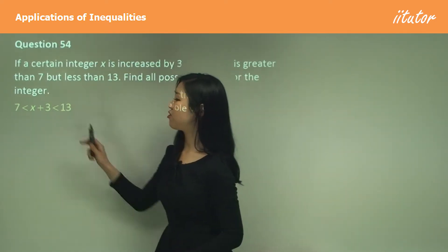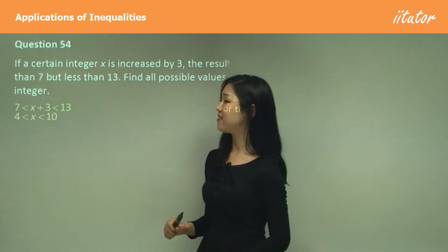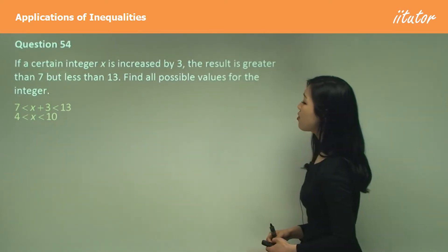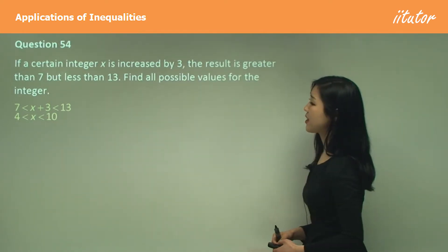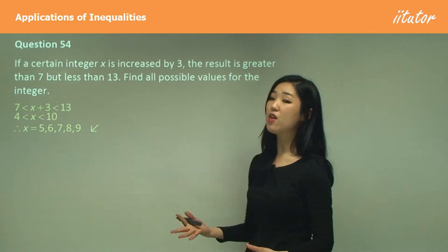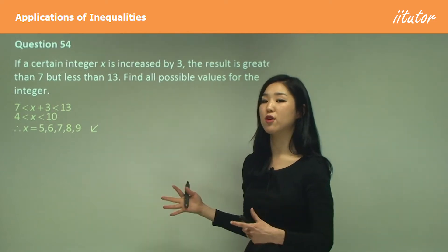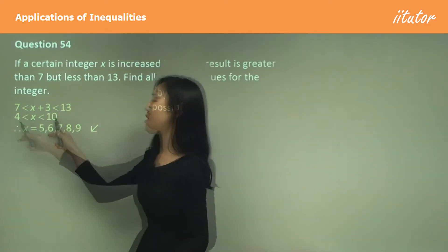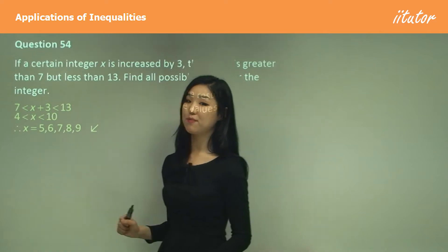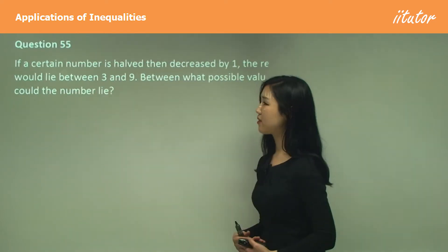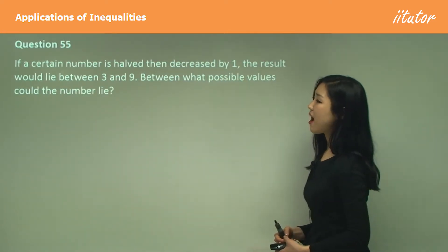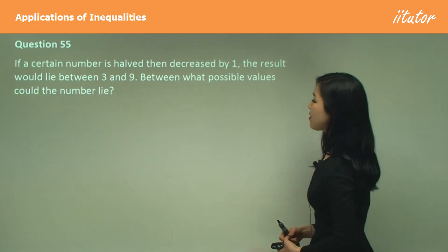Subtract 3 from both sides to get the inequality 4 < x < 10. So all the possible values are 5, 6, 7, 8, and 9 — the integers strictly between 4 and 10, not including 4 and 10 themselves.